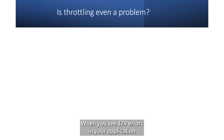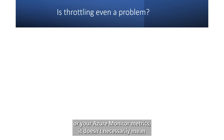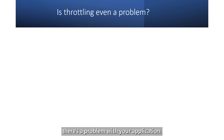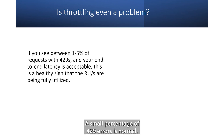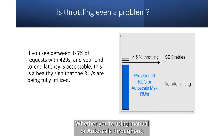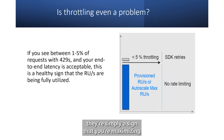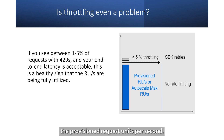When you see 429 errors in your application or your Azure Monitor metrics, it doesn't necessarily mean there's a problem with your application. A small percentage of 429 errors is normal. Whether you're using manual or Autoscale throughput, they're simply a sign that you're maximizing the provisioned request units per second.